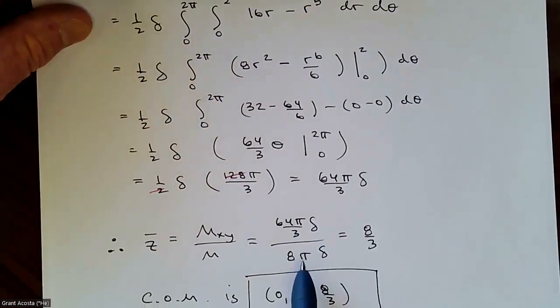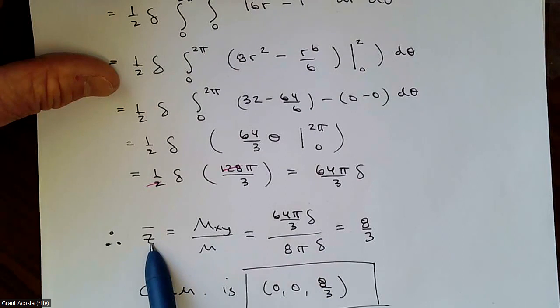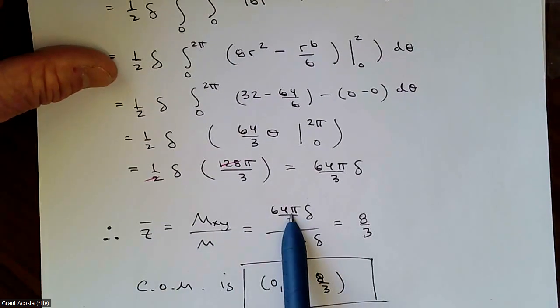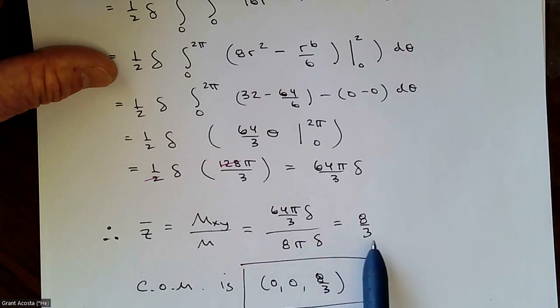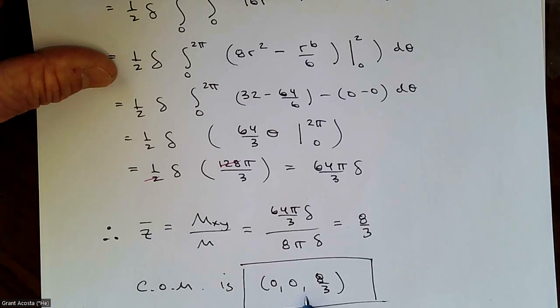And so using my answer for the mass, I can now see that z-bar is the moment over the xy plane divided by the mass. And that simplifies to just eight thirds. So the center of mass of that object I have is zero zero and eight thirds.